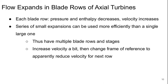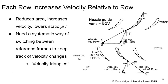So now let's turn our attention to turbines. Basically, the flow is expanding in the blade rows of an axial turbine. In every blade row, the pressure and the enthalpy decrease and the velocity increases. We can do this velocity increase more efficiently if we do it in a series of small steps rather than one big one at once — this is why we have multiple blade rows and stages. We increase the velocity a bit, then change our frame of reference to apparently reduce the velocity for the next row before increasing it again.